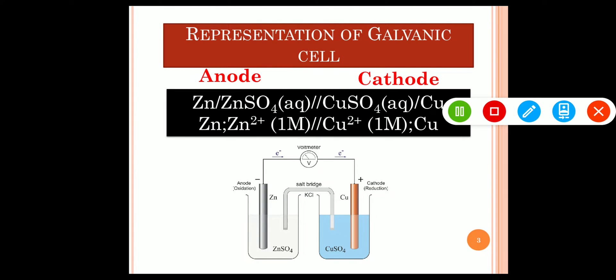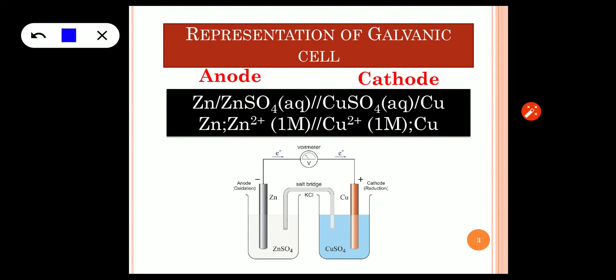The last rule: the anode and cathode are separated using the double vertical line, and this double vertical line represents the salt bridge.